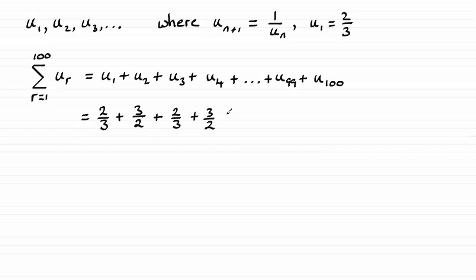Carrying this on, when we get to u99 — which has an odd subscript — we can see that odd subscripts like u1, u3, and so on give us two thirds. So u99 is two thirds, which means u100 must be one divided by two thirds, giving three over two again.